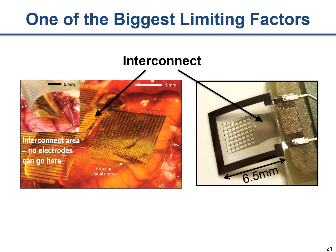One of the biggest limiting factors is interconnect: each electrode needs a wire to a chip, and each chip needs an amplifier, occupying enormous area. This is a major bottleneck to scaling to larger channel counts. Researchers are pursuing multiplexers on the electrodes, better fabrication processes, needle-like electrodes (e.g., Neuralink), and other approaches.